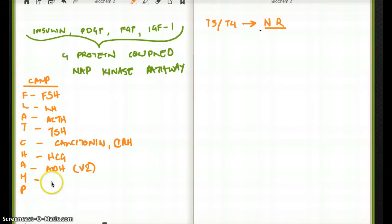M is going to be for MSH and P is going to be for PTH. Now there are two extra ones which don't really fall under the mnemonic. They are GHRH and glucagon. Those two are also going to be under the FLAT CHAMP, the one that deals with cAMP pathway.